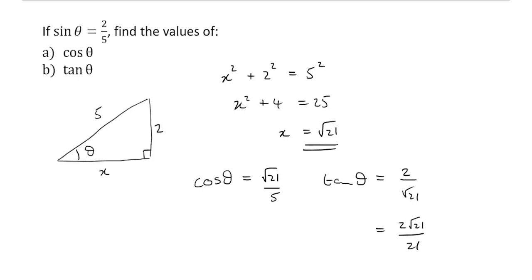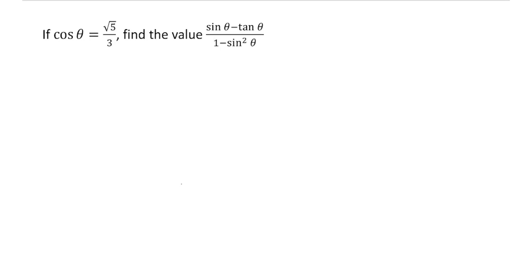Okay, so the key idea, draw out the triangle, label two of the sides appropriately, and then you can find the third side using Pythagoras. Let's do another example.